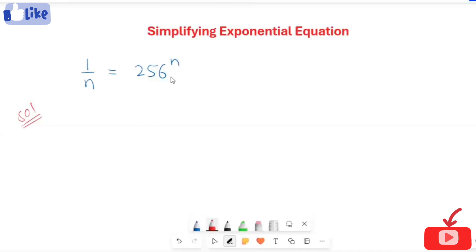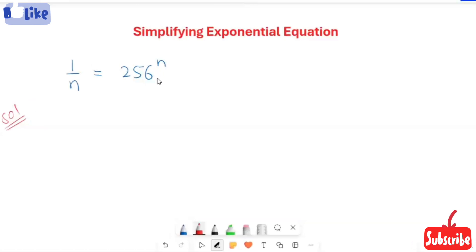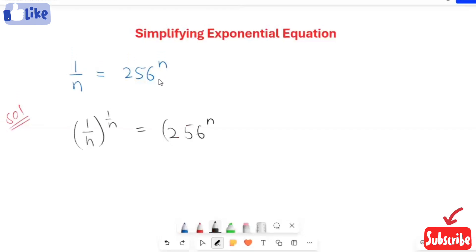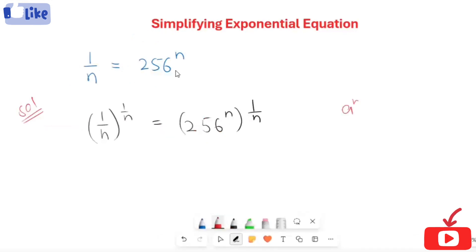First, I'm going to raise both sides to the power of 1 over n. Here, I'm going to use the exponential rule where (a to power m) to power n equals a to power m times n.